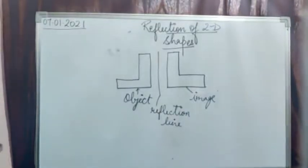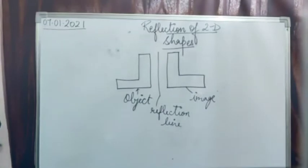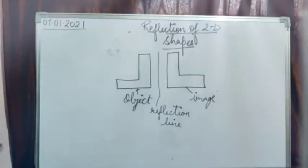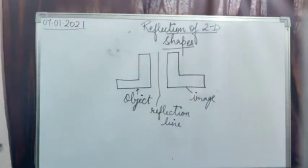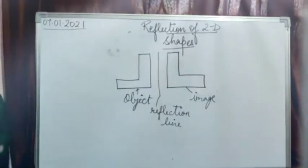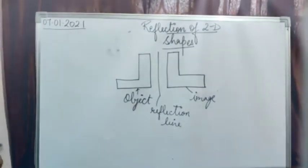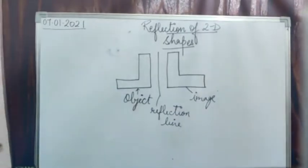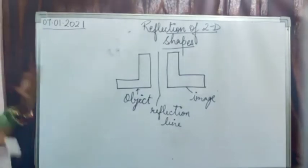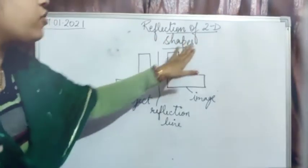Good morning children. Before this video we have discussed lesson number 12 geometry, where we discussed line, line segment, ray, angles and the types of angles. In the next video we discussed parallel lines, perpendicular lines and the line of symmetry. Now in this video we are going to discuss the reflection of 2D shapes and rotation of 2D shapes, with which we will complete lesson 12.